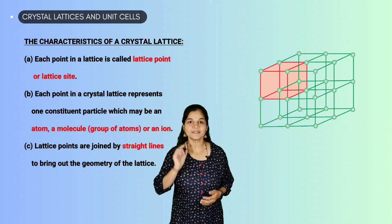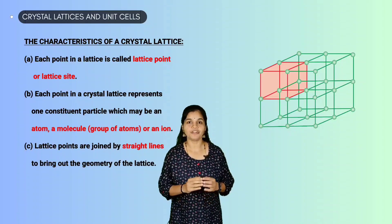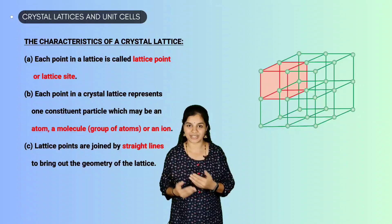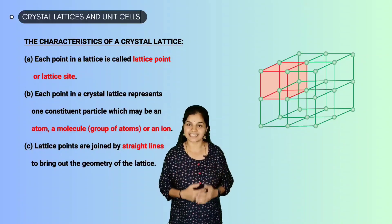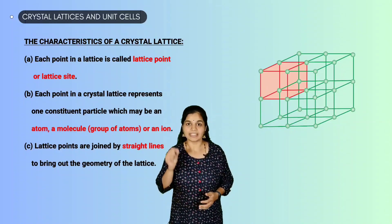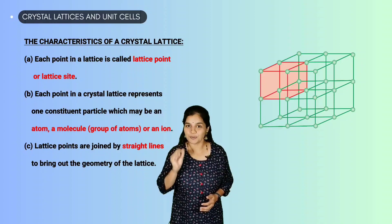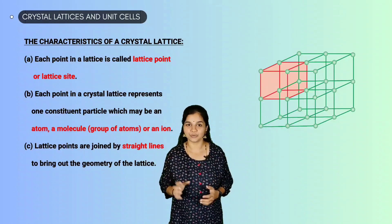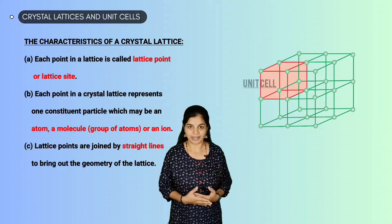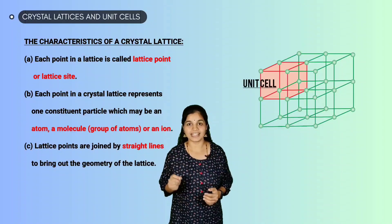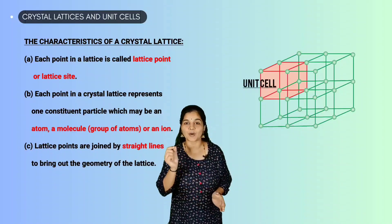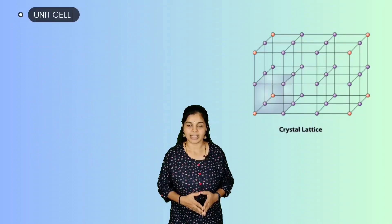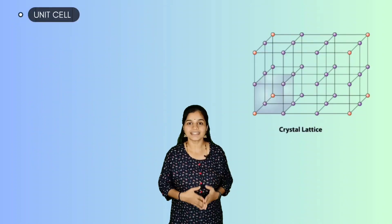The smallest portion of a crystal lattice, when repeated in different directions, can regenerate the entire crystal lattice. This smallest repeating portion is called the unit cell. A unit cell can be described as the smallest portion of the crystal lattice.